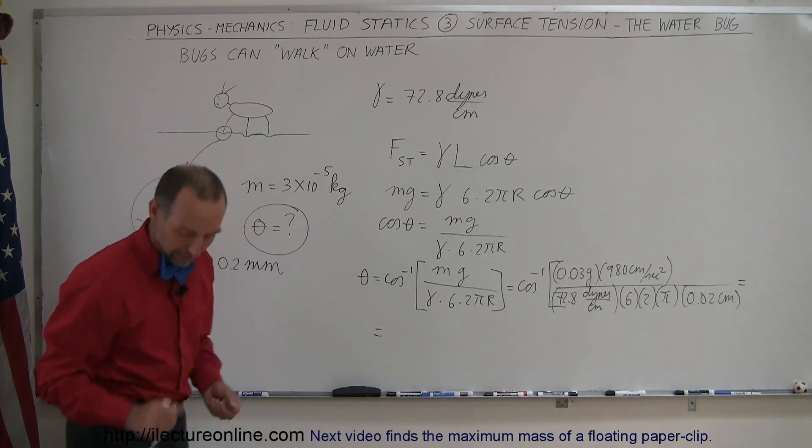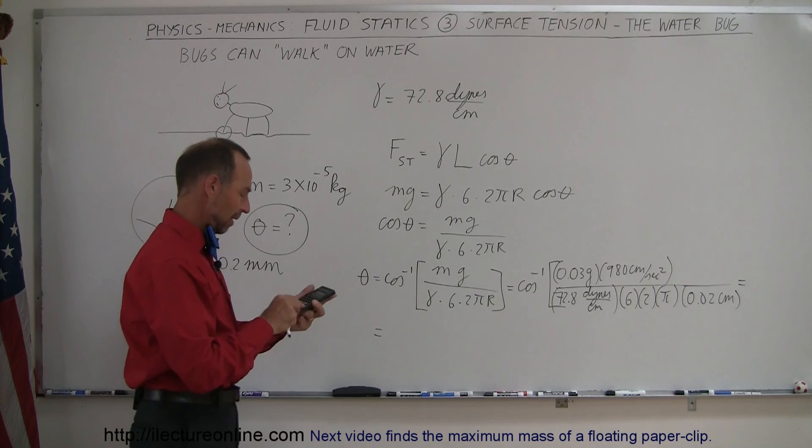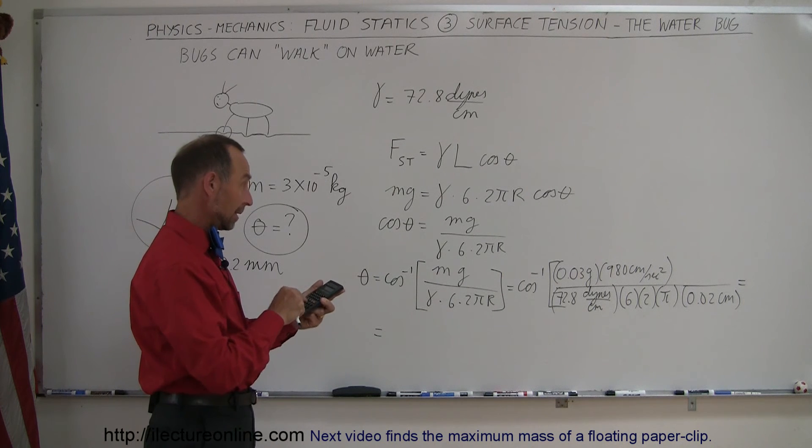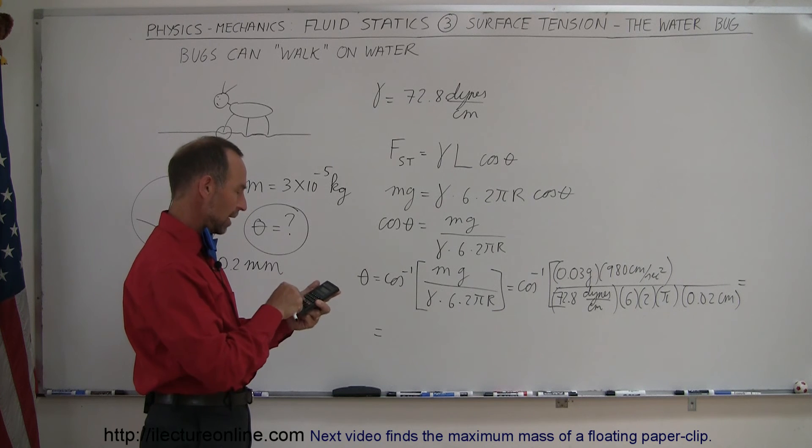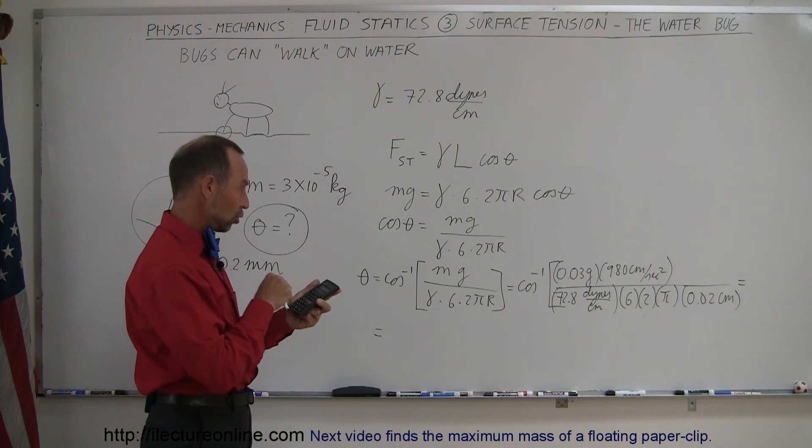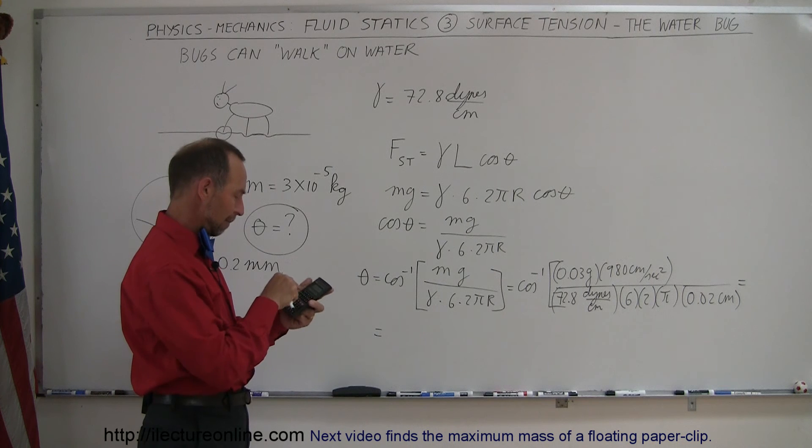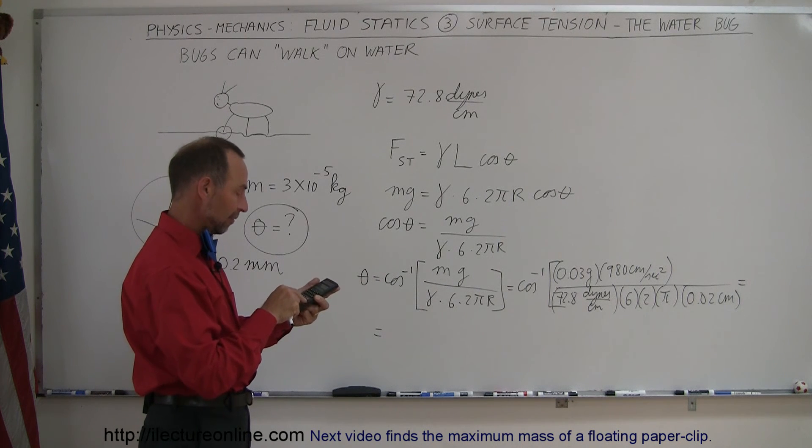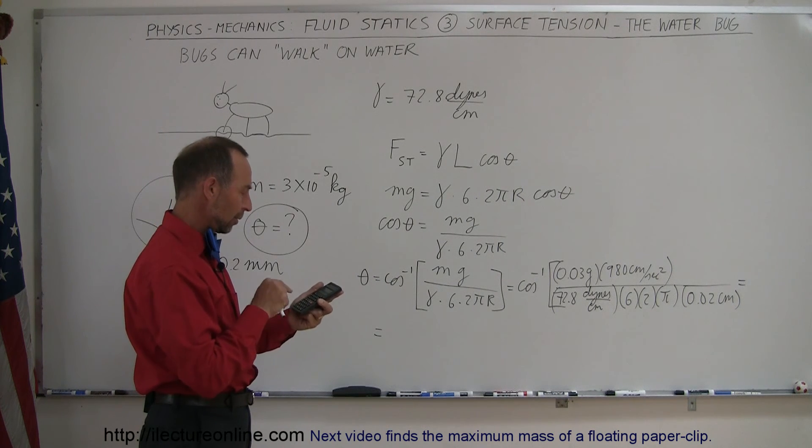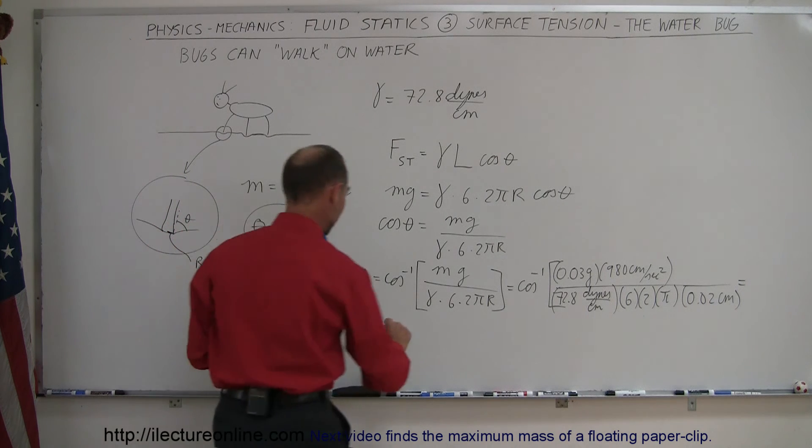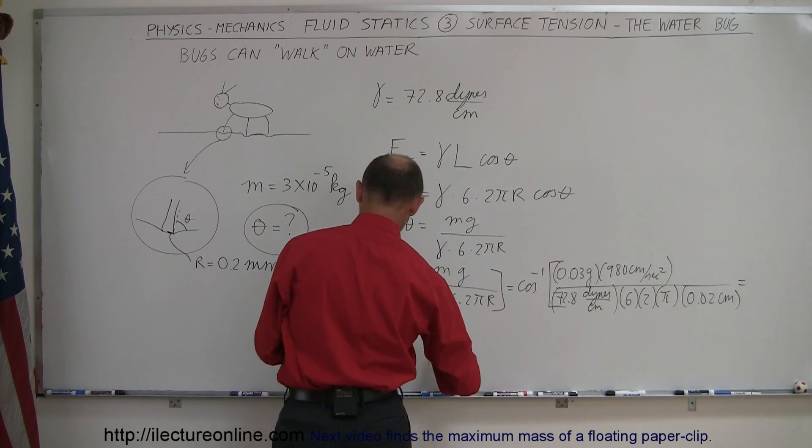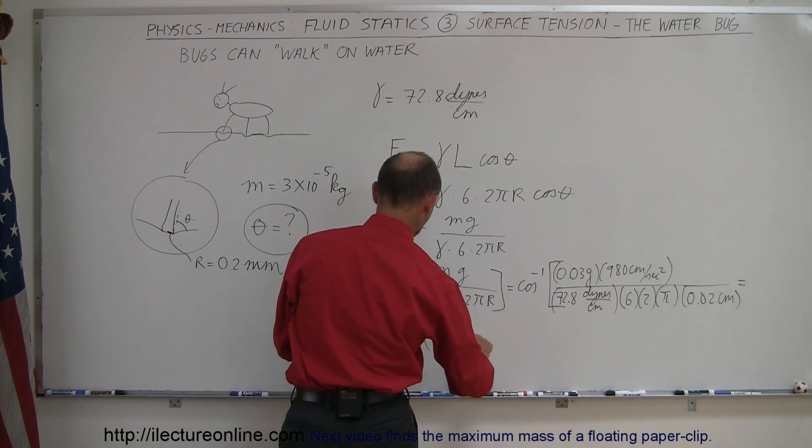Coming over here. Let's see what that is equal to. So we have 0.03 times 980 divided by 72.8 divided by 6 divided by 2 divided by pi and then divided by 0.02 equals. So it's the arccosine. Let me just write that down. The arccosine of 0.5356.